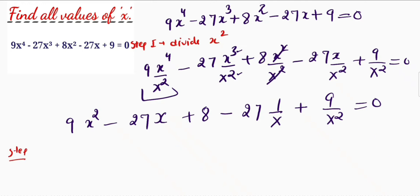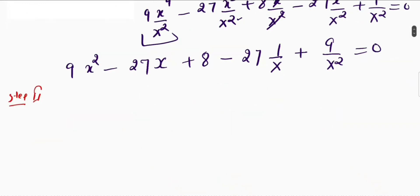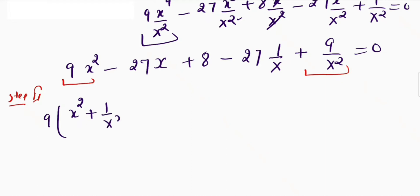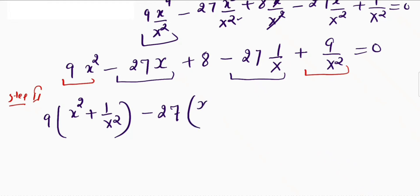The second step is to rearrange all these terms. First I will take 9x square and 9 divided by x square together, so I can factor out 9 with (x square plus 1 upon x square). Second, I will take negative 27x and negative 27 times (1/x) together, so I can take 27 out and inside I will be left with (x plus 1 upon x). And this 8 will come last.